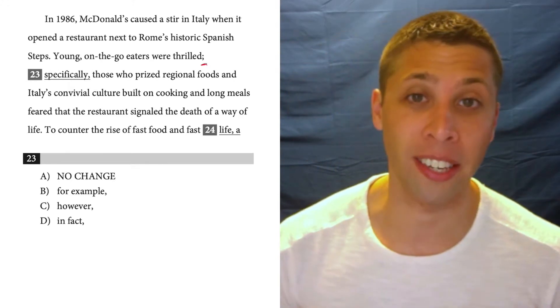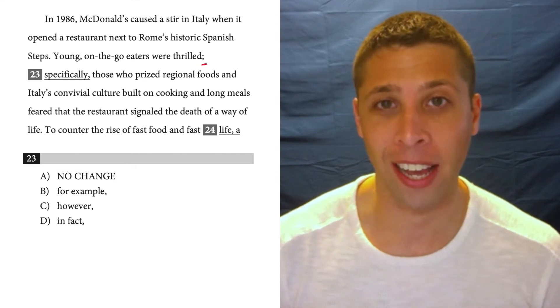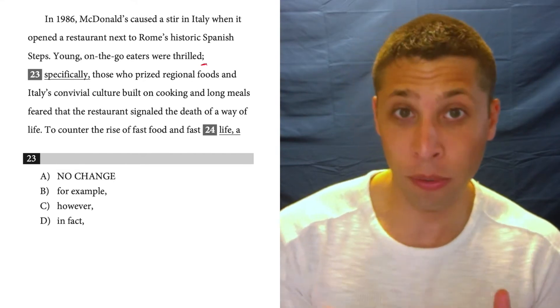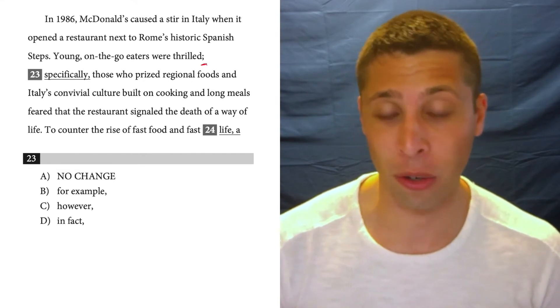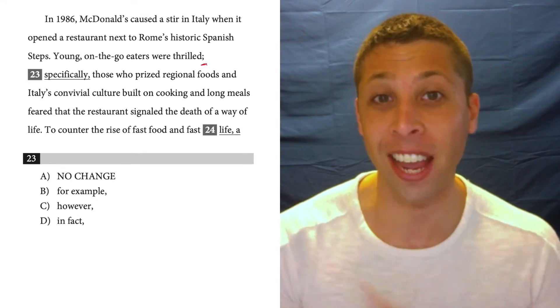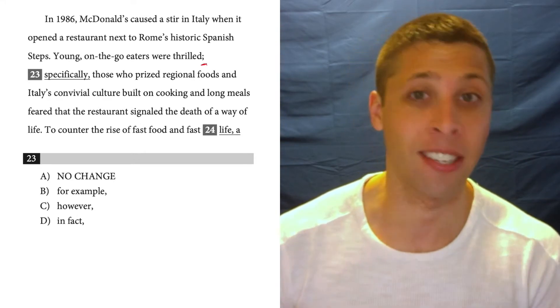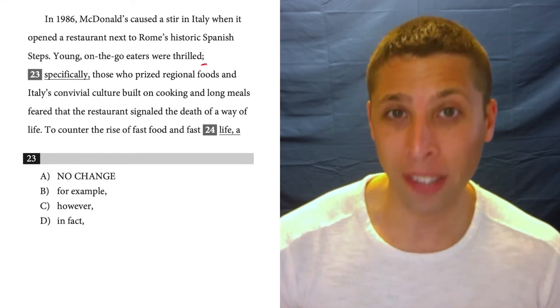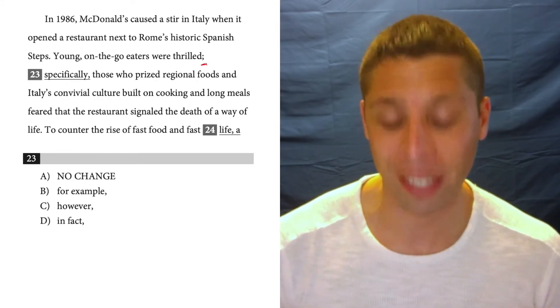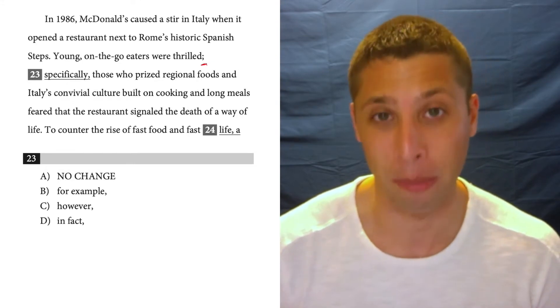Remember that a semicolon on the SAT is basically functioning as a period. So for a typical transition question, we're supposed to read the sentence that contains the transition and the sentence that comes before it. Even though this looks like one sentence, this is really two sentences and we can still follow the same strategy here.